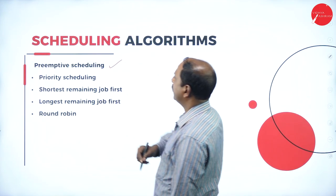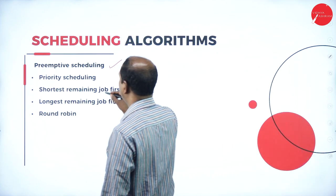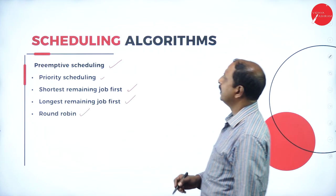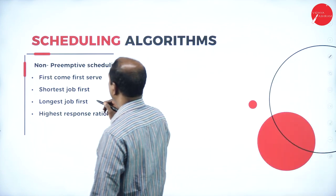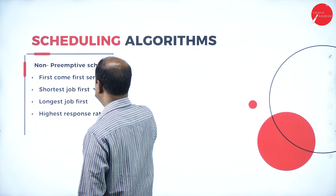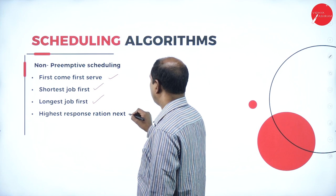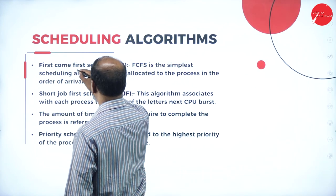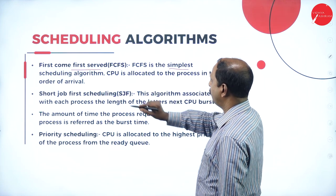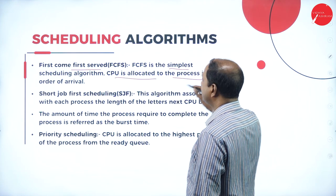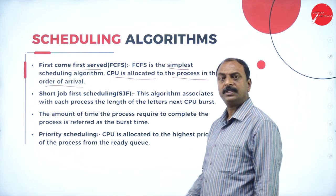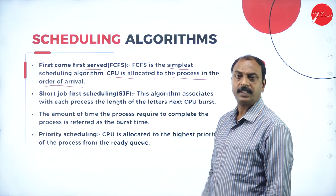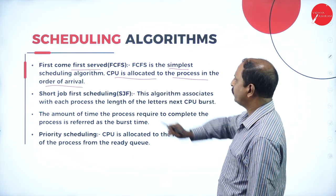Under preemptive scheduling, the types are: priority scheduling, shortest remaining job first, longest remaining job first, and round robin scheduling. Under non-preemptive scheduling, the types are: first come first serve, shortest job first, longest job first, and highest response ratio next. In the first come first serve algorithm — the simplest scheduling algorithm — the CPU is allocated to the process in order of arrival, so whichever process is first in the queue is given priority.